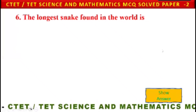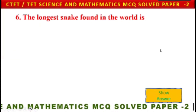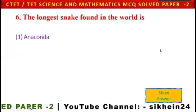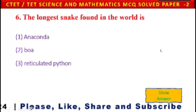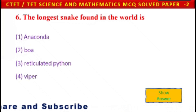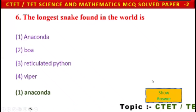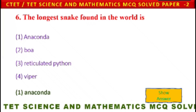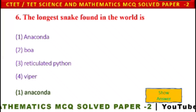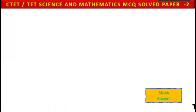Next question: The longest snake in the world is — 1) anaconda, 2) boa, 3) reticulated python, 4) viper. Anaconda is the appropriate answer — anaconda is the longest snake in the world.